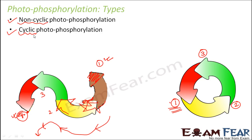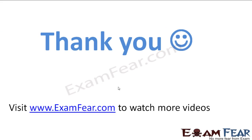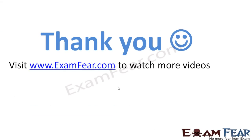We will discuss both these processes — first non-cyclic photophosphorylation, then cyclic photophosphorylation. This is how ATP synthesis takes place in the presence of light. Thank you, please visit www.examfear.com to watch more videos, attempt free online tests, get free study material, and find tutors and mentors.